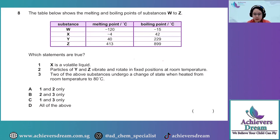Question 8. The table below shows the melting and boiling points of substances W to Z. So we have W, X, Y, and Z. And we are given three statements and asked which statements are true.